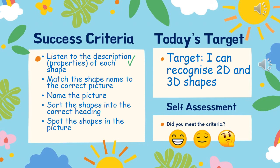How well did you do in this lesson? Remember to self-assess to use the emoji that you think you are and write that down on your work. Your target today was recognizing 2D and 3D shapes. It was a recap from year 2. When you look at a shape, can you name it? You should have listened to the descriptions of each shape, which are called the properties. You'd match the shape name to the correct picture. You named the picture. You sorted the shapes into the correct heading. You spotted the shapes in the picture and said, that's a triangle. That's a hexagon. Hope you've remembered lots about 2D and 3D shapes. Please bring your work with you to school tomorrow so that I can see how well you've done. I hope you're all okay and I shall see you tomorrow back at school.